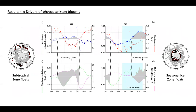The results I showed before used all the floats in the SOCCOM array. However, the highest density of float profiles comes from the sub-Antarctic zone and the polar Antarctic zone, so in a way the signal I just showed is biased towards those two regions. Here I am showing what happens at the two extremes.